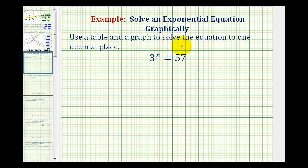We want to use a table and a graph to solve the equation to one decimal place. We have 3 raised to the power of x equals 57.